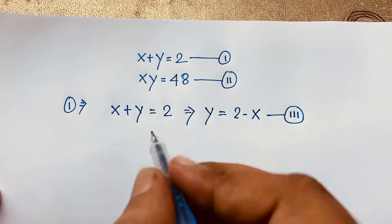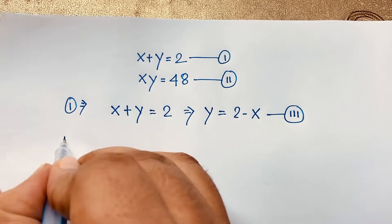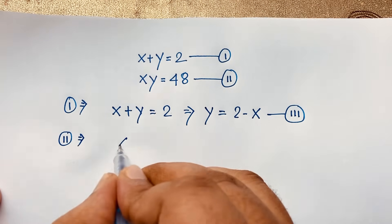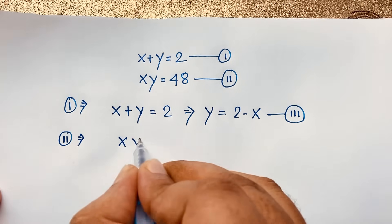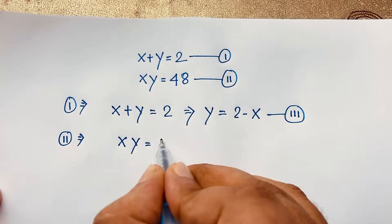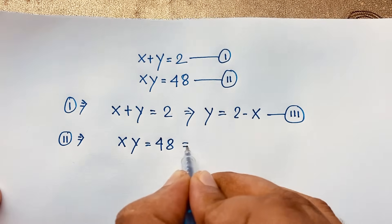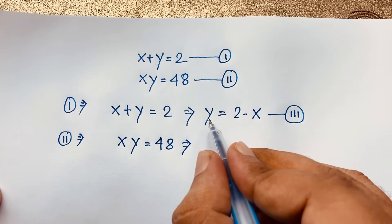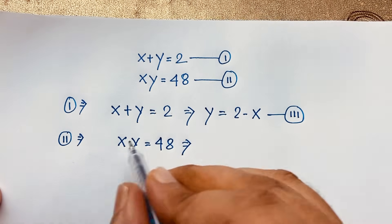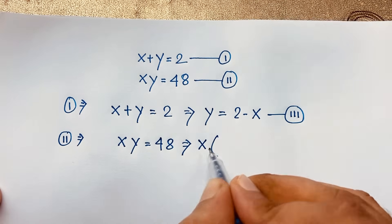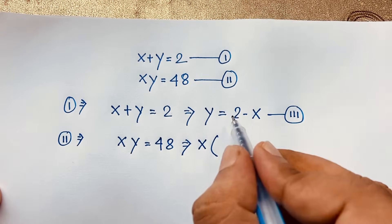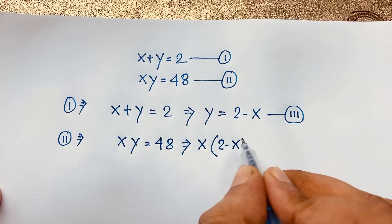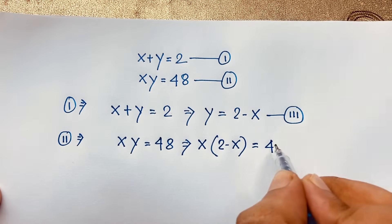Now I take our second equation which is xy is equal to 48. Remember that y is equal to 2 minus x. So it will be x times (2 minus x) is equal to 48.